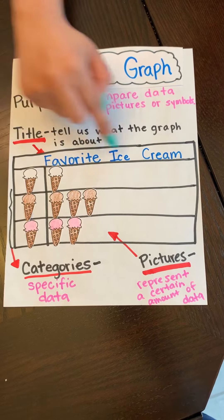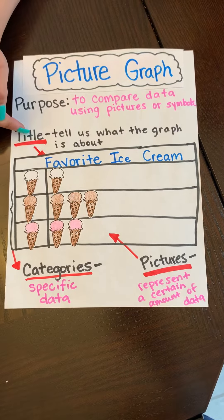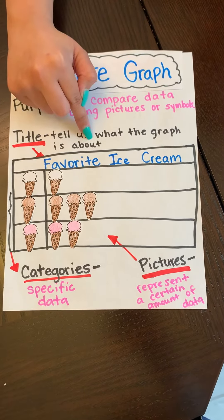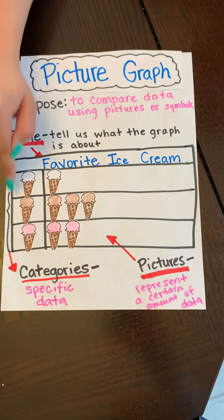So right here is a picture graph. Right here is the title. The title tells us what the graph is about. So this graph is about favorite ice cream.